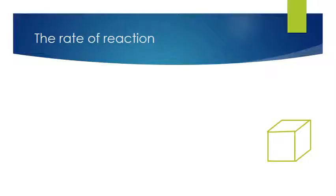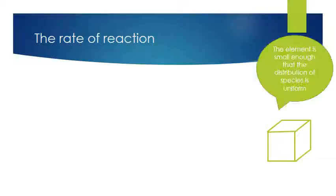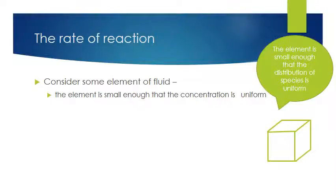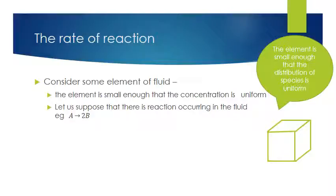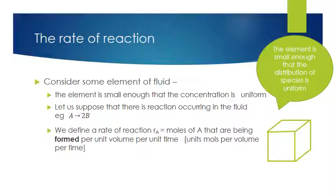Let us again consider a volume, as shown at the bottom right-hand screen. This element of volume is small enough that the distribution of species in that element is uniform. Suppose there is a reaction occurring in the fluid — molecule A being converted to two molecules of B. We define the Rate of Reaction, Rate A, as the moles of A that are being formed per unit volume per unit time in that element. The units of the Rate of Reaction are moles per volume per time.